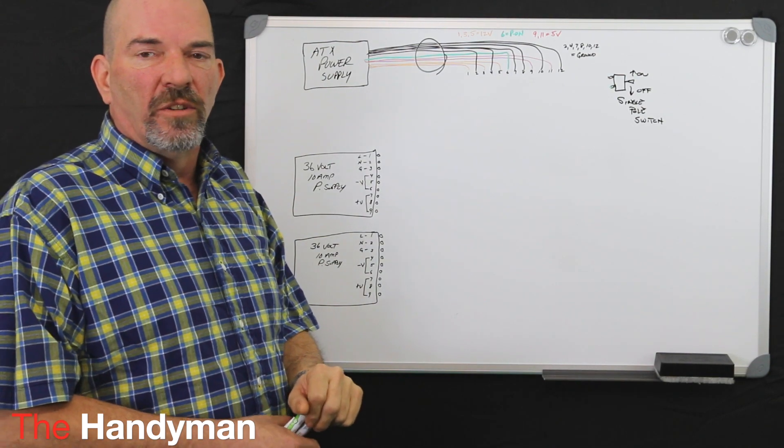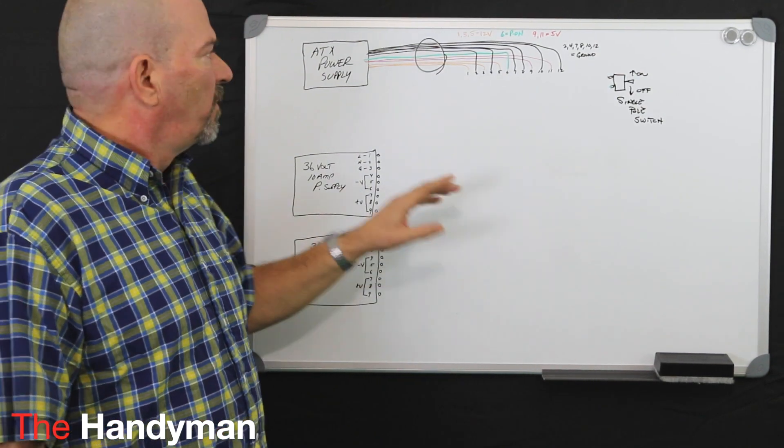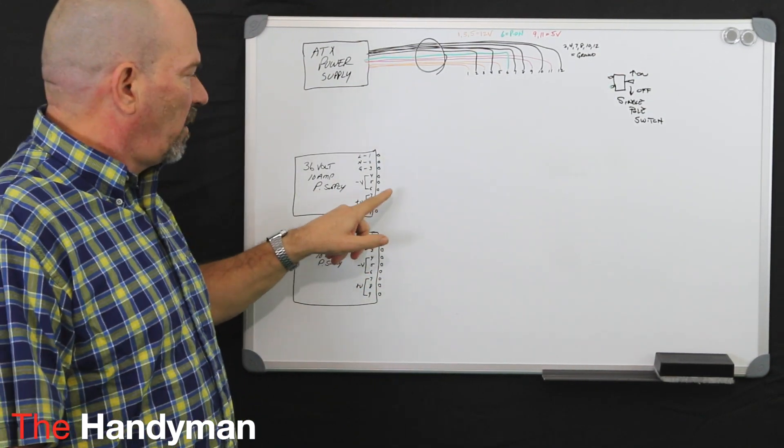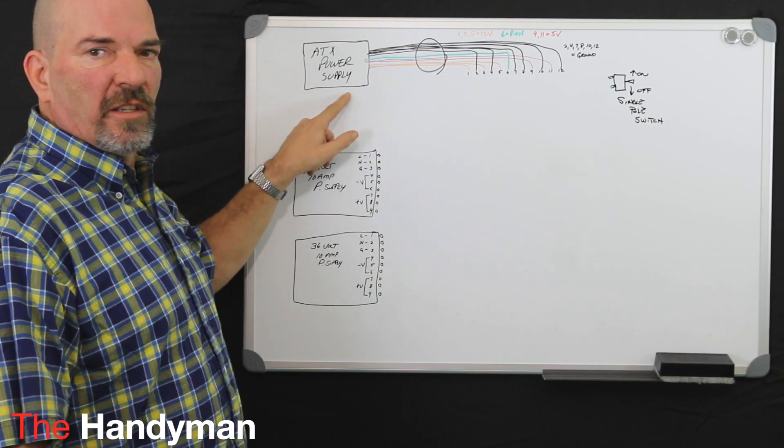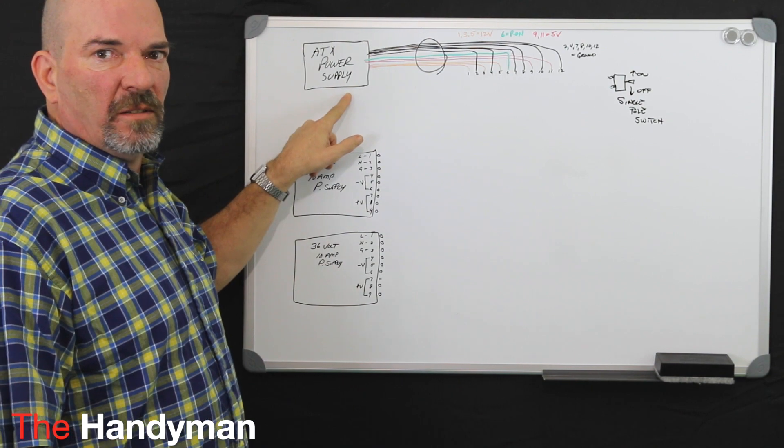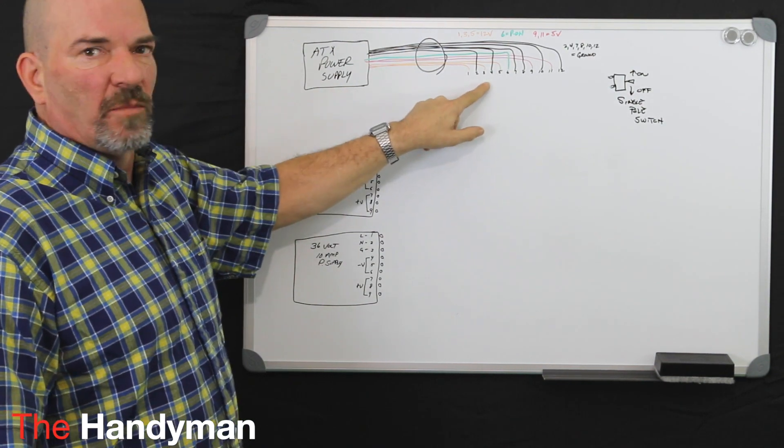Alright, now on to part two. In part two, you're going to need two power supplies, your ATX power supply installed, and wires laying on a terminal strip.